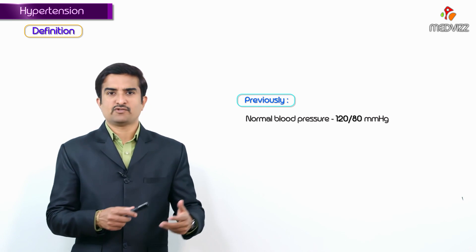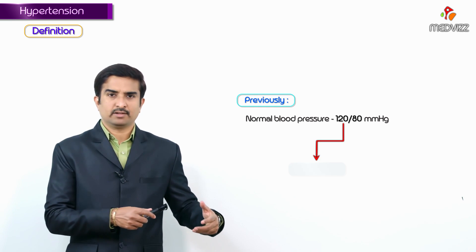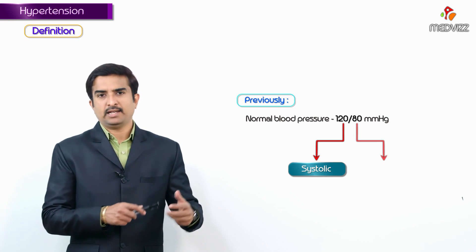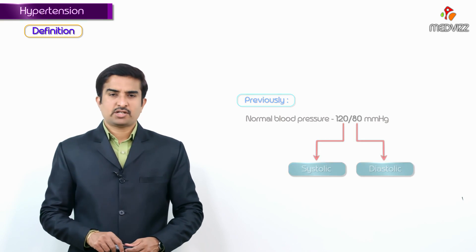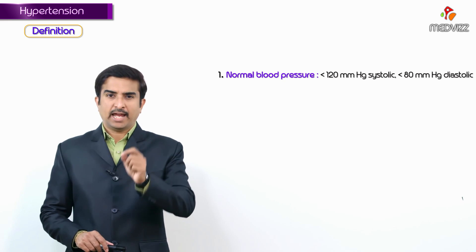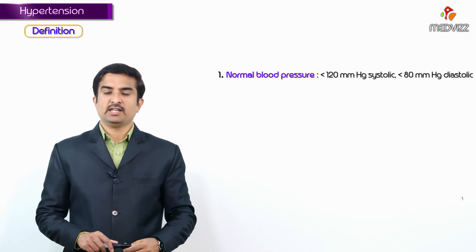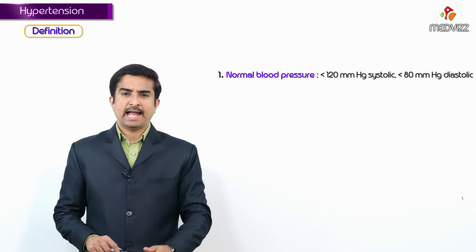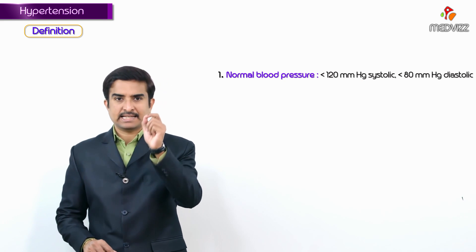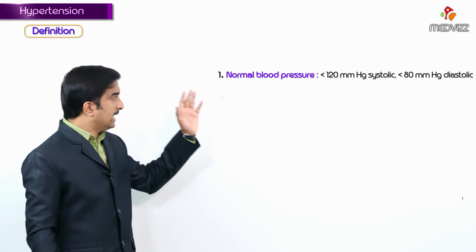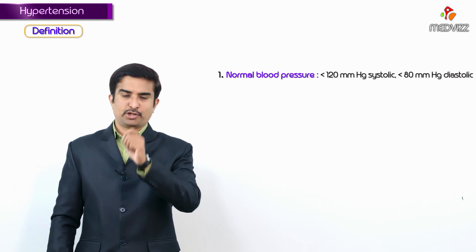Previously the values were different, but the latest updates say something new. Previously the normal blood pressure was said to be 120 by 80, where 120 is the systolic pressure and 80 is the diastolic pressure. At present, normal BP is defined as systolic blood pressure less than 120 mmHg and diastolic blood pressure less than 80 mmHg.